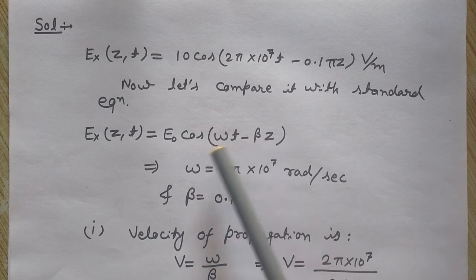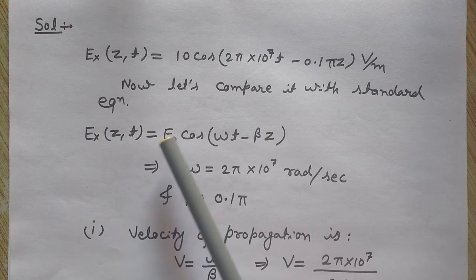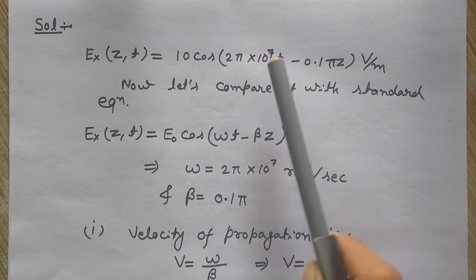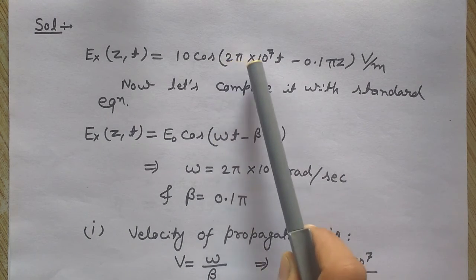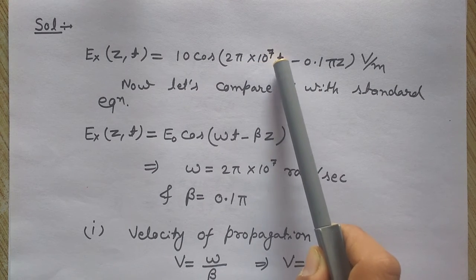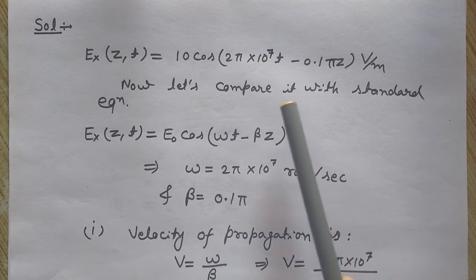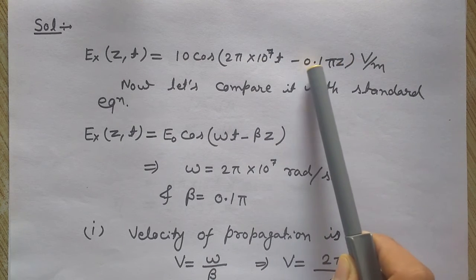Now let's compare these two equations. As you can see, at the place of ω, I have 2π × 10^7. This is the coefficient of t just before t, so this is ω.